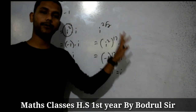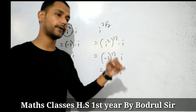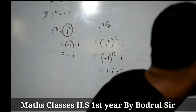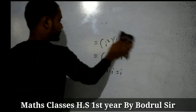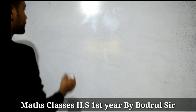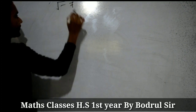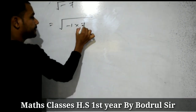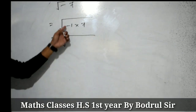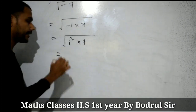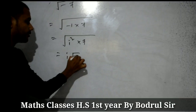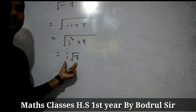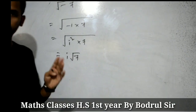So i to the power 25 equals i, the fundamental imaginary unit with value root of minus 1. Same way, you can find i to the power of any real number. For example, root of minus 7 can be written as root of minus 1 times 7, and since minus 1 equals i squared, the square root gives i into root of 7. So root of minus 7 equals i times root 7.